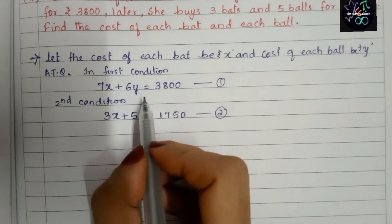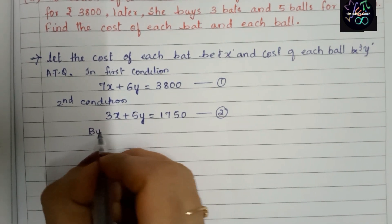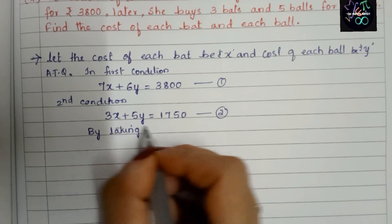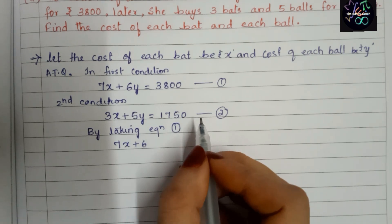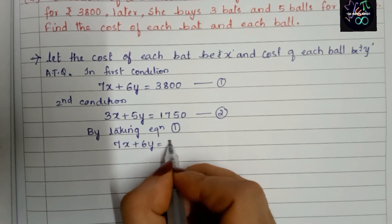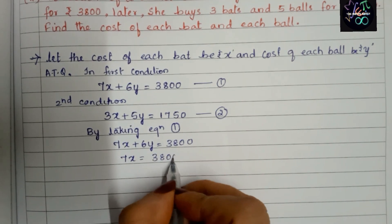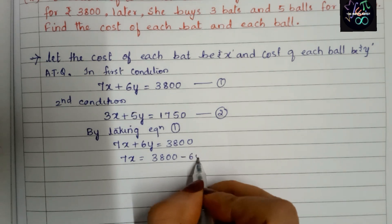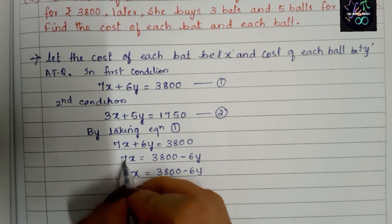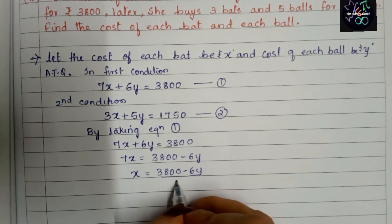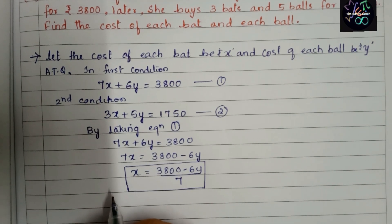Now let us solve using the substitution method. Taking Equation 1: 7x + 6y = 3800. We isolate x: 7x = 3800 − 6y, so x = (3800 − 6y) / 7. This is our x value. Now we put this x value into Equation 2.